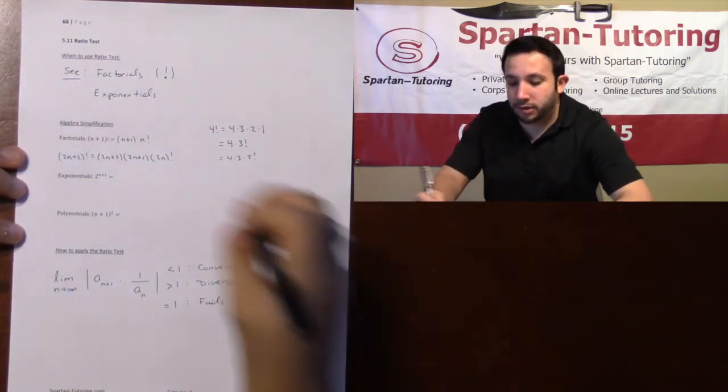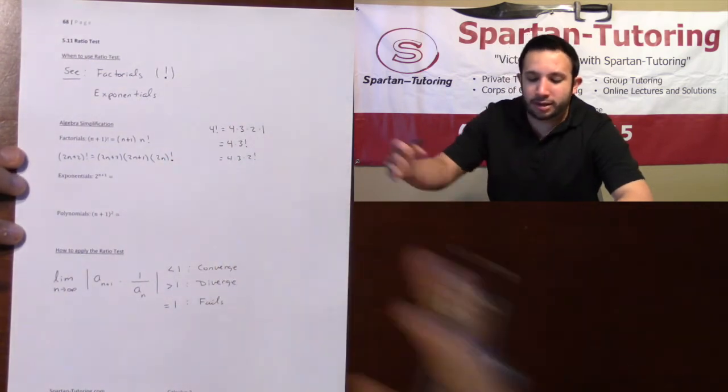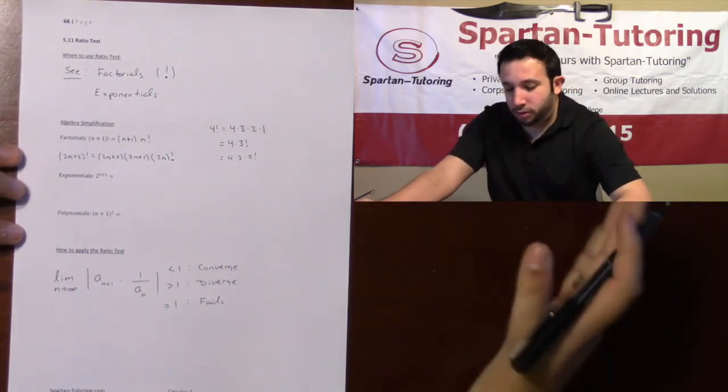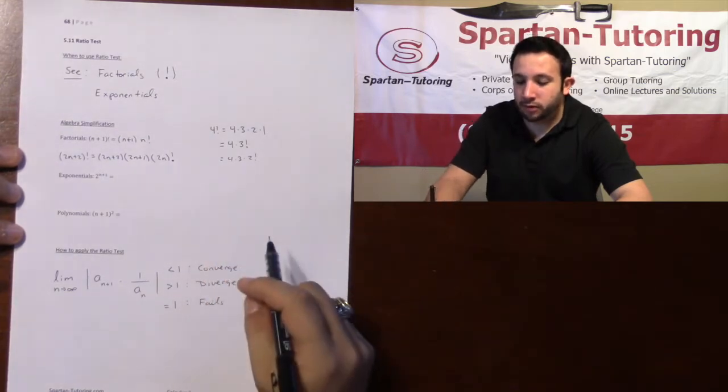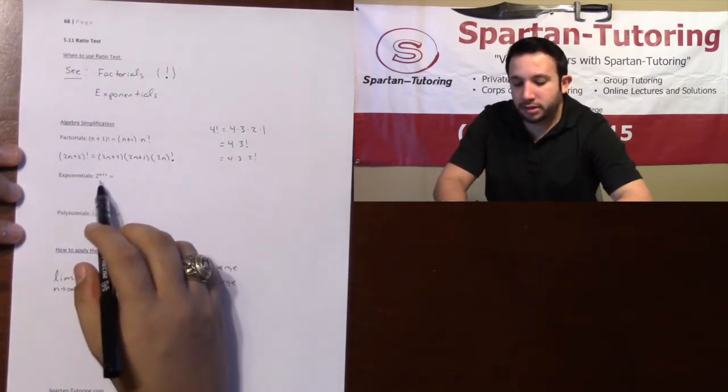And I can go one less than that, 2n, and I can throw the factorial down wherever I want. Hypothetically, I could keep on going and go 2n minus 1, 2n minus 2, throw the factorial at the edge wherever you want.